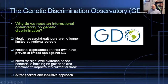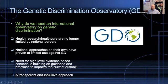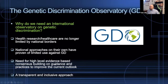National approaches on their own have proven of limited use against genetic discrimination. I'm not at all against adopting national laws to prevent genetic discrimination, but many of these laws have not had the efficacy that was once thought they would have. Basically, 10 to 15 years after some laws were adopted, we see that in those countries, genetic discrimination remains a problem. We have to think back on whether we crafted the laws the way they should have been, and there is a need for high-level, evidence-based, consensus-building on guidance and practices.